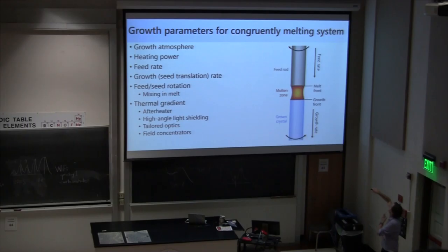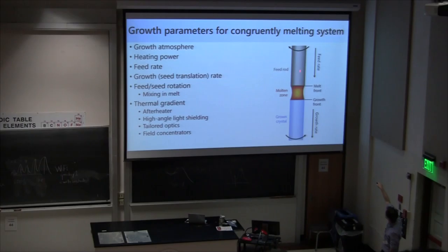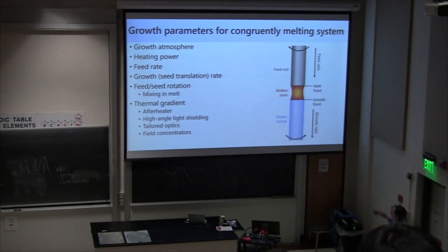So what are the growth parameters when we're doing floating zone growth? For congruently melting systems — where the system that I melt is the system that recrystallizes — first you have to make sure you have the appropriate growth atmosphere for the chemistry you're after, and obviously you need the requisite heating power to actually melt the feed material. The other two parameters are the rate at which you translate the feedstock down, and also the seed translation rate — the growth rate. The feedstock is attached to a shaft on a stepper motor, and the seed crystal is attached to another shaft. Some furnaces translate the heating zone itself by moving a mirror assembly.